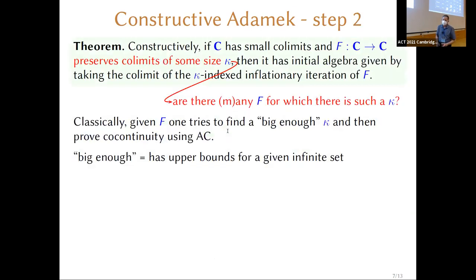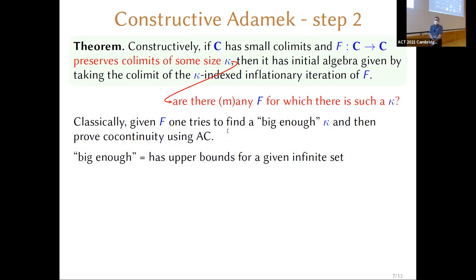That's not the end of the talk, because there's a problem: however nice the theorem might be, it may not be of much use unless we know there are functors that actually preserve co-limits of some size. Classically, given a functor constructed in some way, you'd find a big enough ordinal and prove co-continuity with respect to co-limits indexed by that ordinal, probably using the axiom of choice. We have to constructivize that.